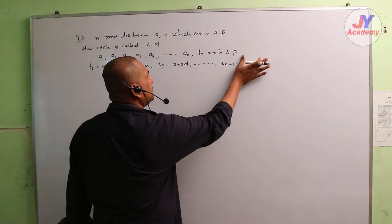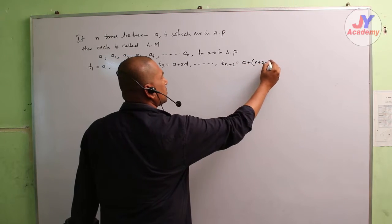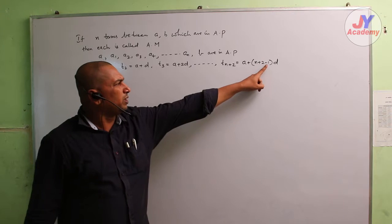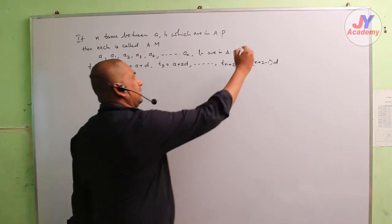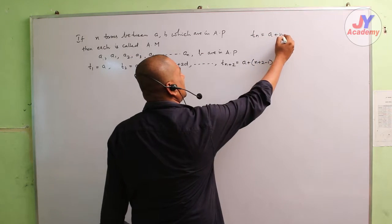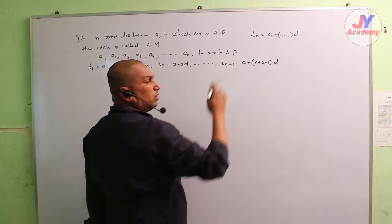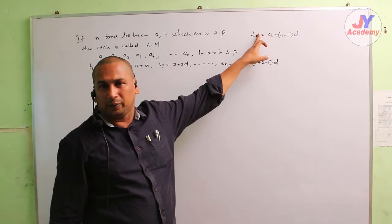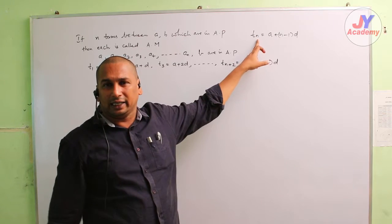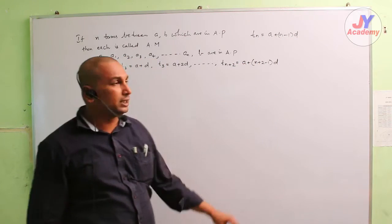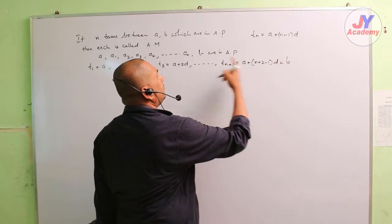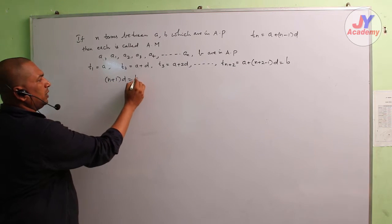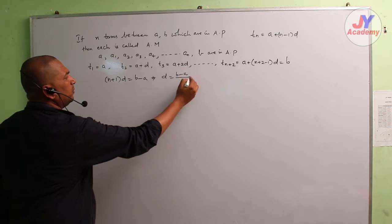So what is the formula for t(n+2)? That is a plus (n+2−1) into d. The general term formula is a plus (n−1) into d. For example, tm = a plus (m−1)d, tp = a plus (p−1)d, t10 = a plus 9d. Since t(n+2) equals b, we get (n+1) into d equals b minus a.